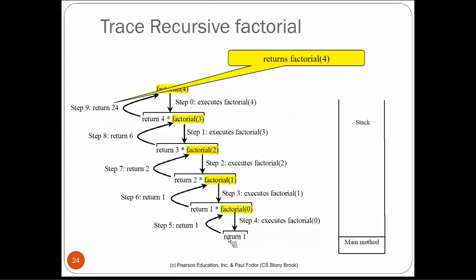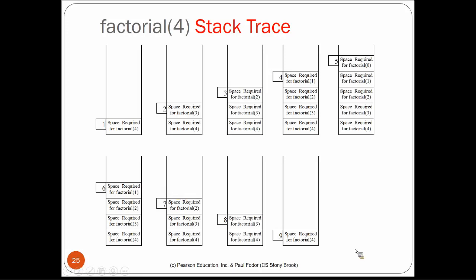The stack evolved: it started with the space for factorial(4), then added frames for factorial(3), factorial(2), factorial(1), factorial(0), then started popping factorial(0), factorial(1), factorial(2), factorial(3), and factorial(4). At the moment it returns to main, the stack only contains the frame for the main method — nothing else.